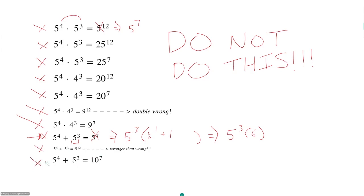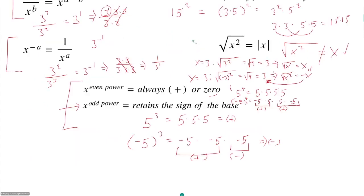Your exponent rules are not that many, but there are many ways to screw them up. Do not do any of these wrong things. Just take the time — take half an hour one day to sit down with this sheet, memorize these rules, do a bunch of drill sets, and that way they will be cemented in your brain.